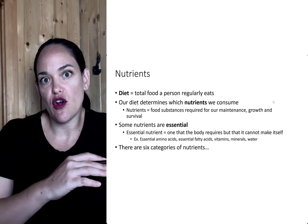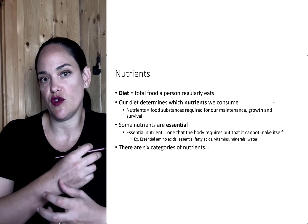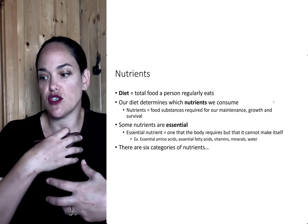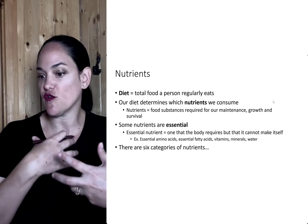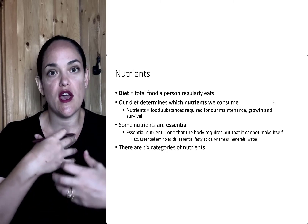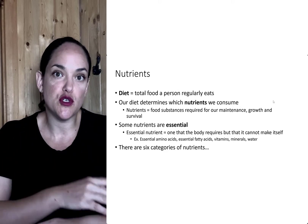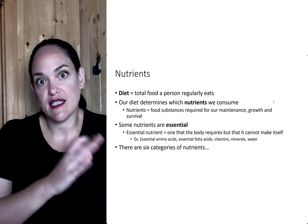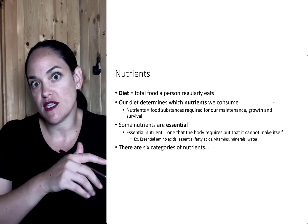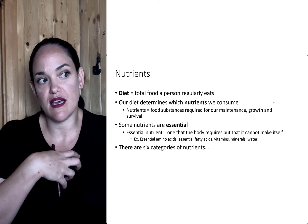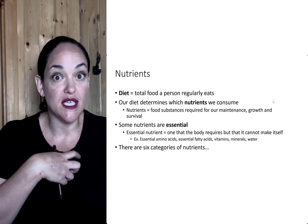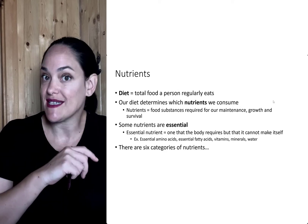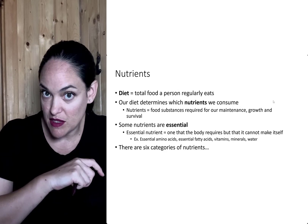Nutrients are substances found in food that our body needs to survive, for maintenance, for growth, to be able to do all the various things it needs to do. And some of these nutrients are essential, meaning that you absolutely need to consume them from the diet because the body is unable to make them itself.